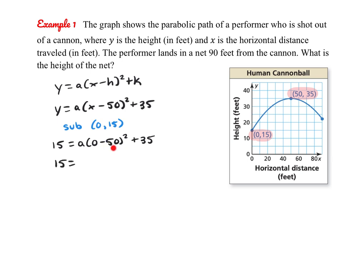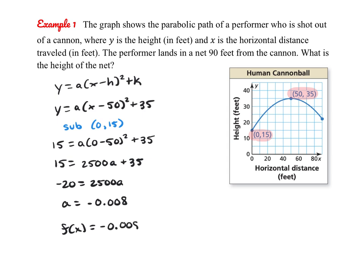Negative 50 squared is positive 2,500. Now I just need to finish solving. When we're modeling, we'll probably use our calculator and get a decimal — sometimes we'll have to round, sometimes it's exact. Using our calculator, we get a equals negative 0.008.